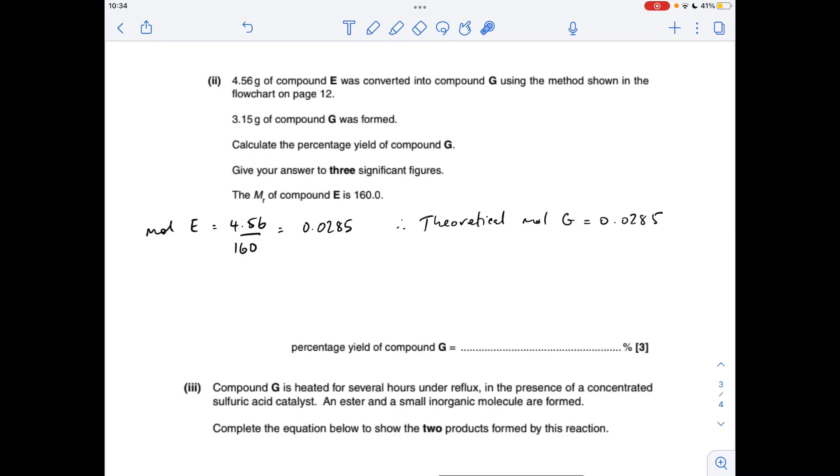Moving on to the percentage yield calculation. The first thing we do is calculate how many moles of E were used: mass over the Mr gave us the Mr for E, so 0.0285 moles of E. There's a one-to-one ratio running through this reaction, so therefore the theoretical moles of G will also be 0.0285.